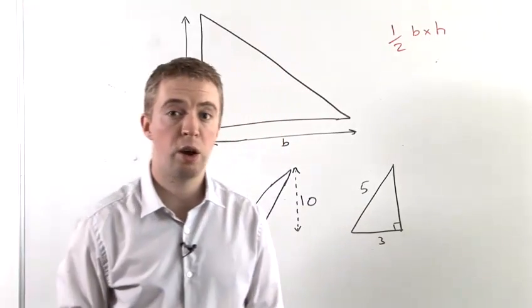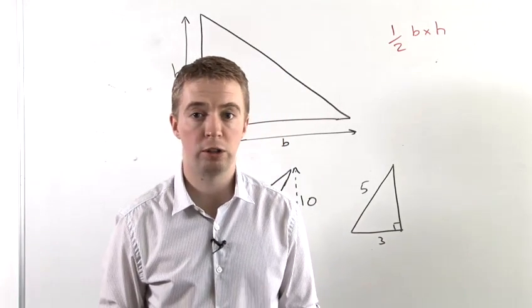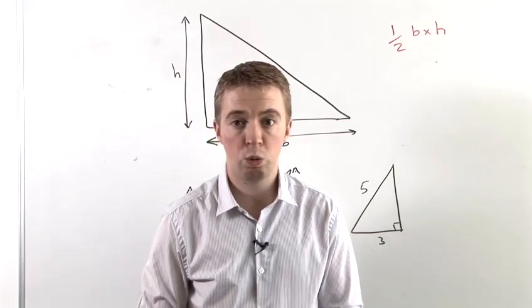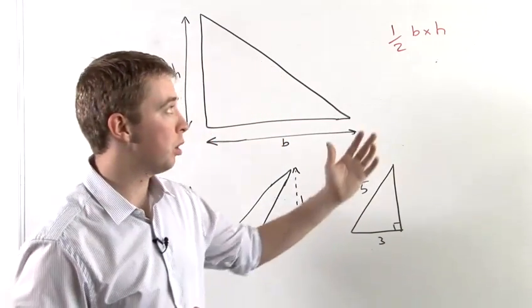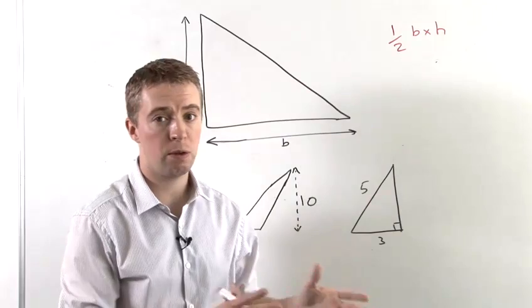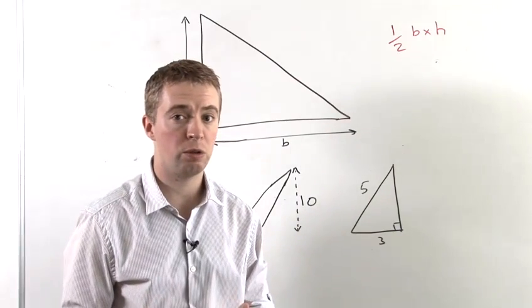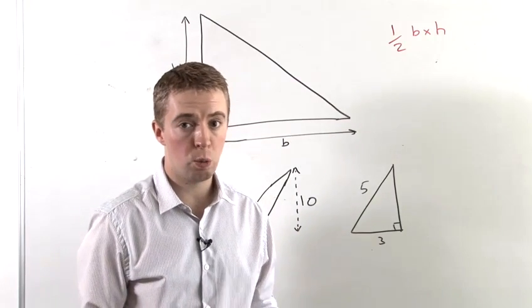So now we're going to look at how to calculate the area of a triangle. I'll tell you to start with that to work out the area, it's half of the base times the height of the triangle. But we should look at why that is.